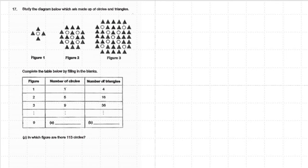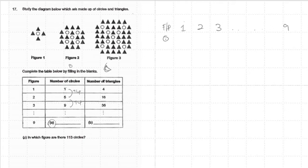Over here you can see this is a circle and this is a triangle. Every time it adds four, add four. It's asking what is 'a'. So the figure is actually equal to pattern number one — the circle goes one, five, nine. Here is number two and number three, until number nine. When the figure is one the circle is one, when figure is two the circle increases. You notice there's a pattern here: add one for figures, and add four for circles.